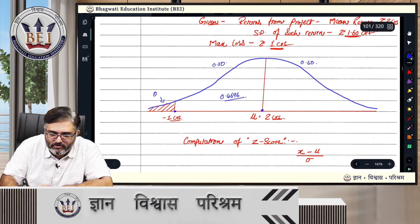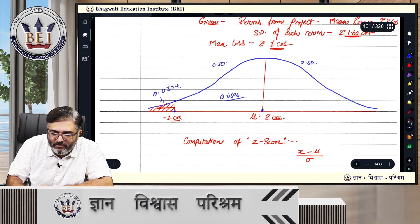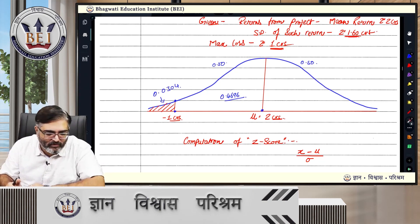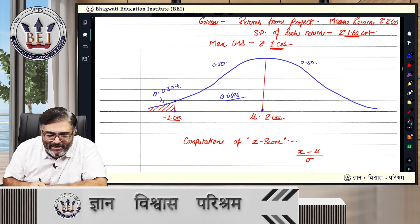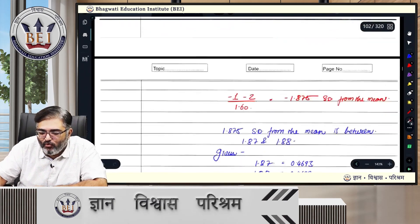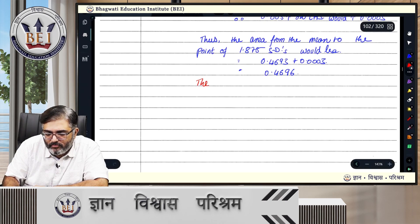This means the area below minus 1 crore — the danger zone — is 0.5 minus 0.4696 = 0.0304. That is, there is a probability of only 3.04% that we land in the situation of losses greater than minus 1 crore.